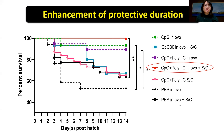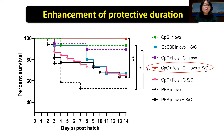We would like to prolong the protection by choosing potential formulations such as CpG 30 micrograms or the combination of CpG and poly IC at 15 micrograms each. In this experiment, we gave two doses: one in ovo and the second dose via subcutaneous route. We found that the second dose can enhance the protection of the CpG and poly IC combination. The combination of CpG and poly IC injected in ovo followed by subcutaneous injection had the highest protection with 100% survival rate, and we observed this experiment for 14 days.